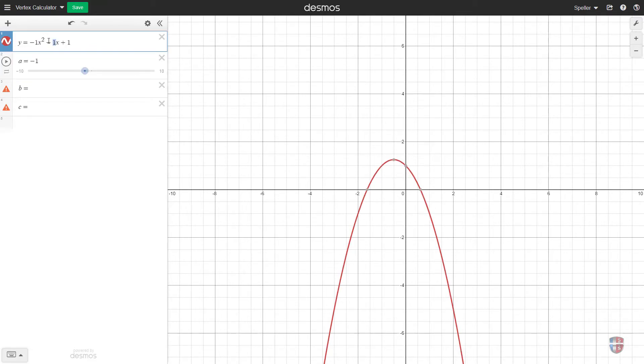And c is the value for c, which in this case is 1. So normally we've learned that you can use the expression negative b divided by 2a.